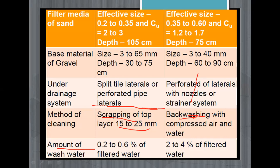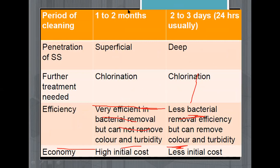The frequency of cleaning is also very different. In the slow sand filter it is once every one to two months, but in the rapid sand filter it is cleaned every two or three days, usually every 24 hours. Because of that, the amount of water required for cleaning is more in the case of the rapid sand filter.